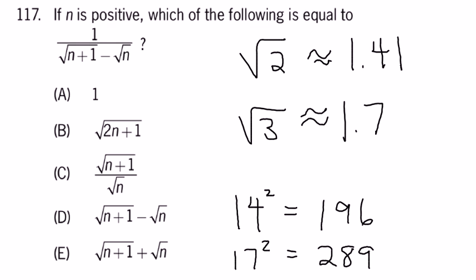It's useful to know that 14 squared is 196 and 17 squared is 289. Knowing both of those things kind of hints that if I square both sides here, I'll get 3 is approximately equal to 2.89.